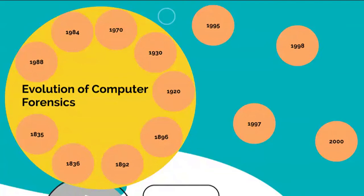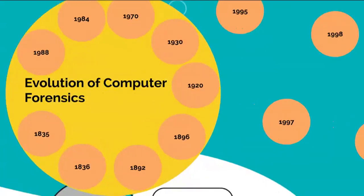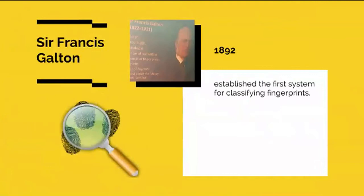Significantly, the history of forensic science dates back thousands of years. Fingerprinting was one of its first applications. The ancient Chinese used fingerprints to identify business documents. In 1892, Francis Galton established the first system for classifying fingerprints.